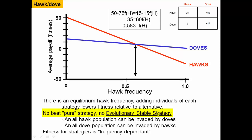If you had a population that was all hawks, any dove that came in would do better and the population would be invaded by doves. If you had a population that was all doves, any hawk that came in would do better and the population would be pushed toward the equilibrium state. So there's no single strategy that is immune to being invaded by the alternate strategy, and the fitness of both strategies is frequency-dependent.